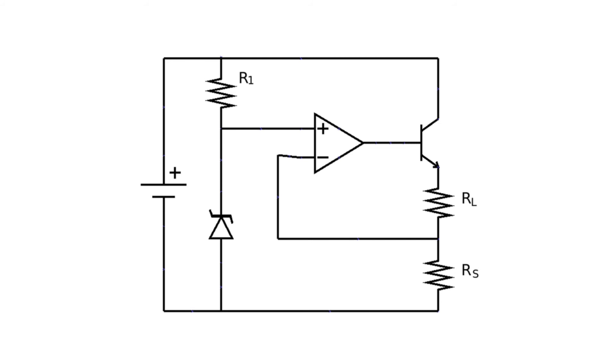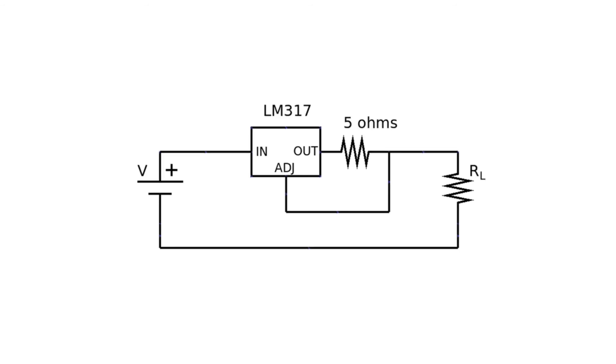And so is the current through the load RL. The last constant current regulator I would like to show is one that can be made using a voltage regulator. For example, using a LM317 voltage regulator connected as a pass-through current in series with a resistor works effectively as a current regulator.